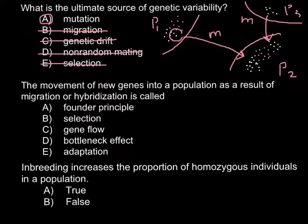The second question: the movement of new genes into a population as a result of migration or hybridization is called — and once again we have five answers: A) founder principle, B) selection, C) gene flow, D) bottleneck effect, E) adaptation. Let me start with answer A, the founder principle.